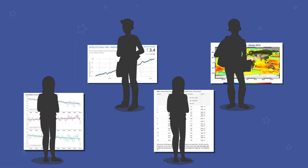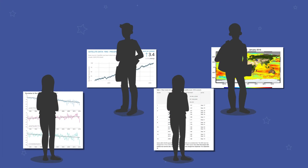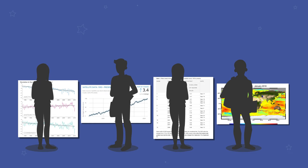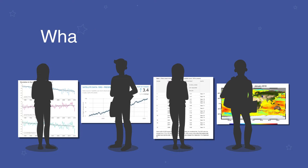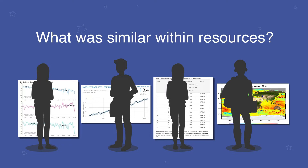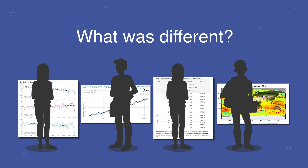Students then review their observations and summarize their data in the space provided on the activity sheet. After each member of the group has had a chance to share their summary, the students work together to answer several questions, such as: what does the data tell you, what was similar within resources, and what was different? Having students investigate authentic data and data visualizations helps them build their understanding of data variability, as well as provides experience identifying trends and making correlations and comparisons.